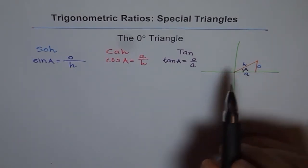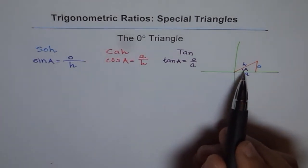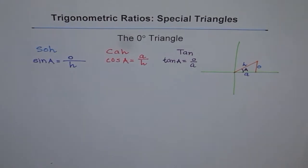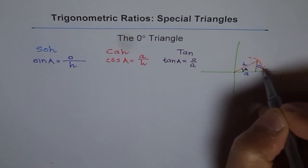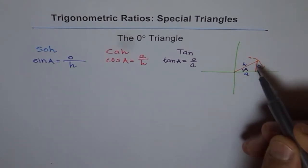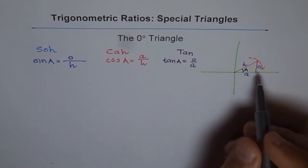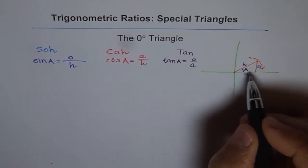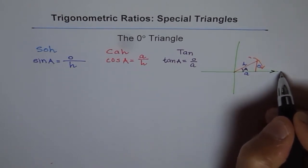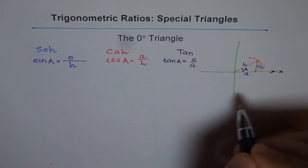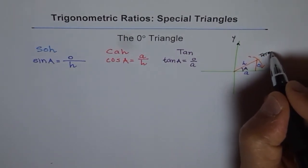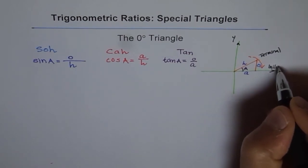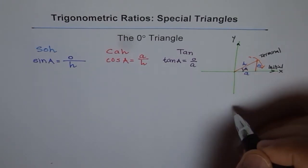Now we will see what happens to these trigonometric ratios as angle A approaches 0. At present let us assume the angle is around 40 degrees. We will move this arm of our angle downwards towards the x-axis. As we move it downwards, A will approach 0 — it becomes lesser and lesser. The angle is always measured from the positive x-axis. The terminal arm moves toward the initial arm, and as they get closer the angle decreases.